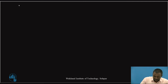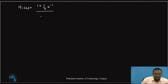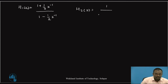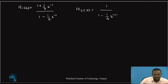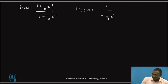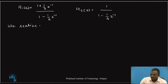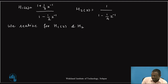From the above expression, H1(z) is equal to (1 + (1/3)z⁻¹) divided by (1 − (1/2)z⁻¹), and H2(z) is equal to 1 divided by (1 − (1/4)z⁻¹). So this is H1(z) and H2(z). Now we realize the direct form 2 for H1(z) and H2(z) as shown below.